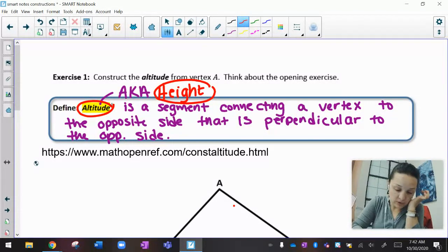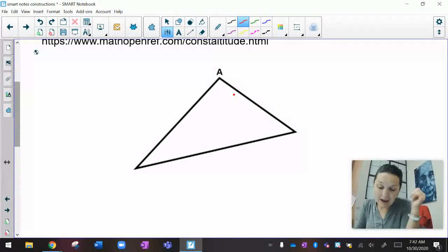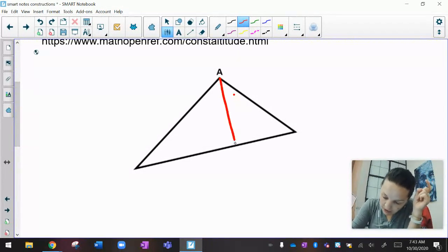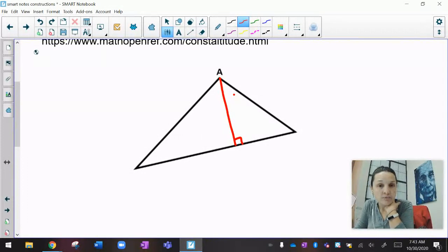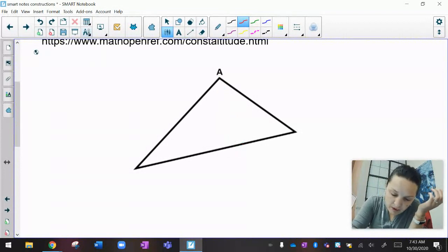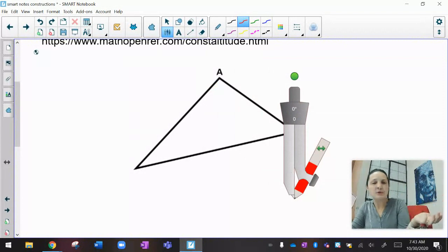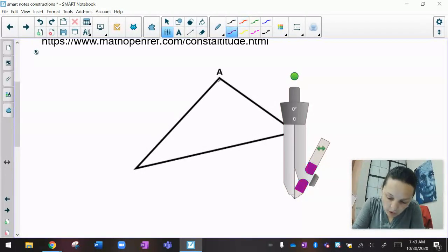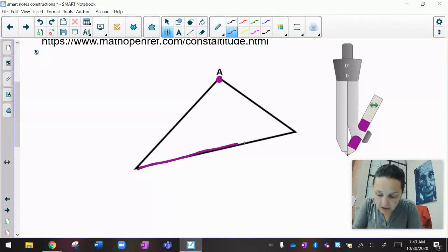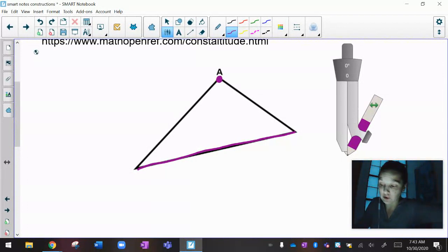Now let's construct an altitude. If I'm going to construct the altitude from A, it's really my height from A. Don't draw this. I'm just sketching it to prove a point here. If I want my altitude from A, what I really want is this segment right here. But I'm not allowed to just wing it. I have to make it perfect. So we're going to do this with our compass.